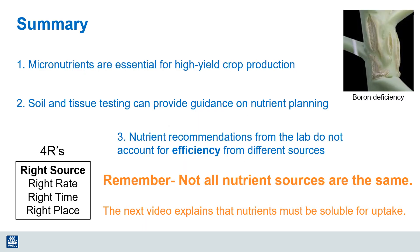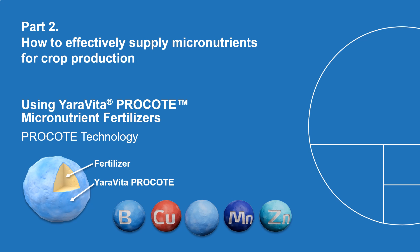So let's wrap up this first part of our discussion. Let's remember that micronutrients are an essential requirement for high-yielding crop production. We can rely on soil and tissue testing to provide that initial guidance required for nutrient planning. When nutrient recommendations come from the lab, they don't account for the efficiency of crop uptake of different fertilizer sources, and not all nutrient sources are the same. In fact, that's why right source is included as a fundamental component of the four R's of nutrient stewardship. In our next video I'll demonstrate that not all micronutrient sources are the same for plant nutrition, and why it's so important to account for the difference in fertilizer sources when making crop nutrition plans. I'll see you in the next video to discuss specific micronutrient sources, including the unique chemistry provided by Yara Vida Prokote Nutrients. Thanks for joining me.